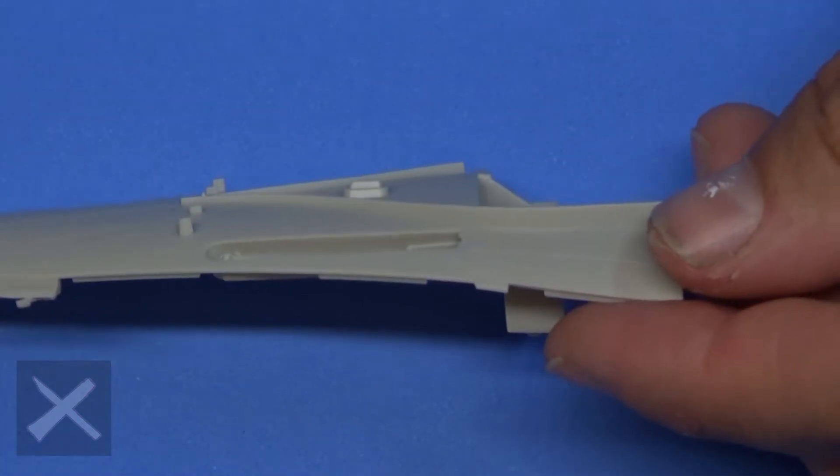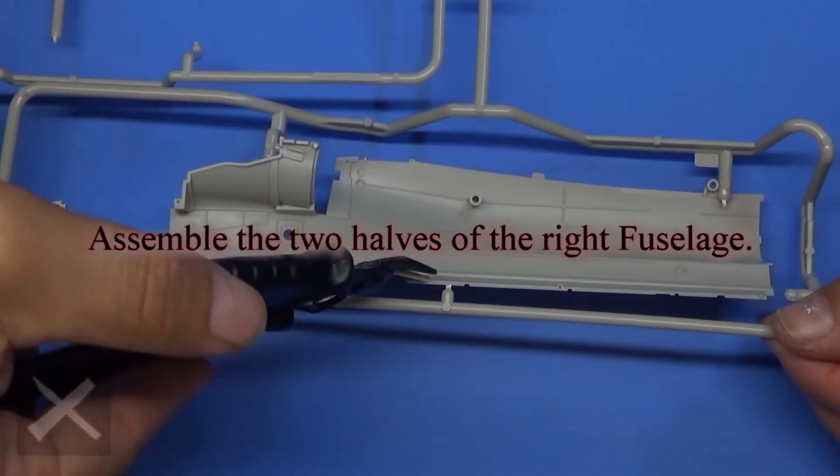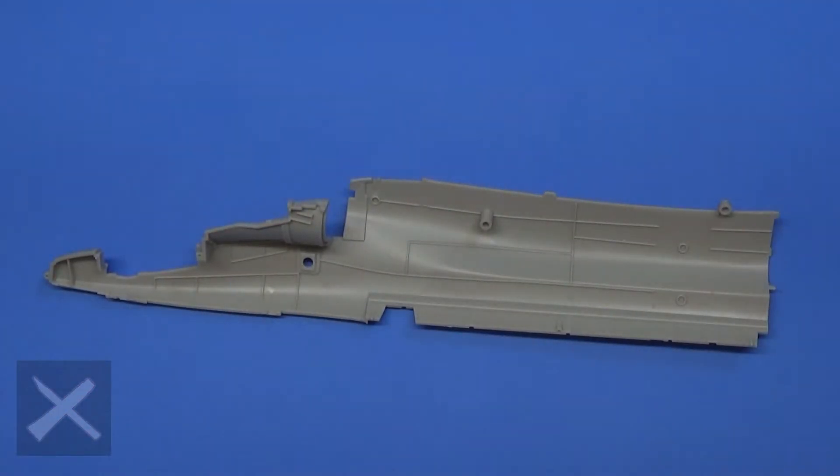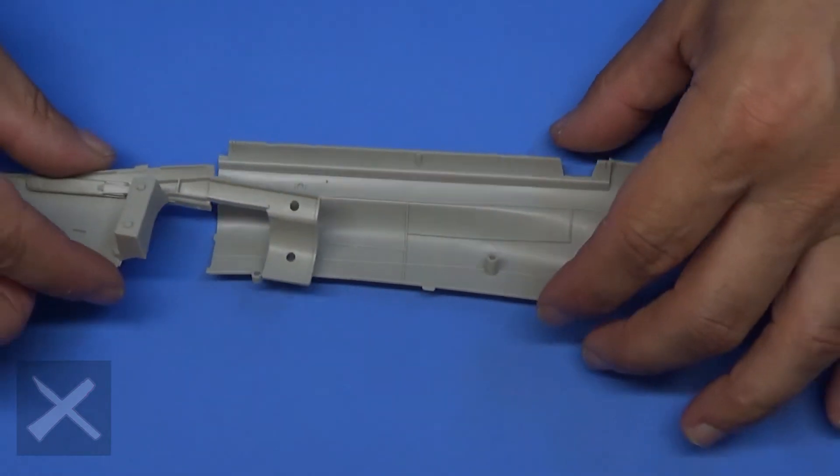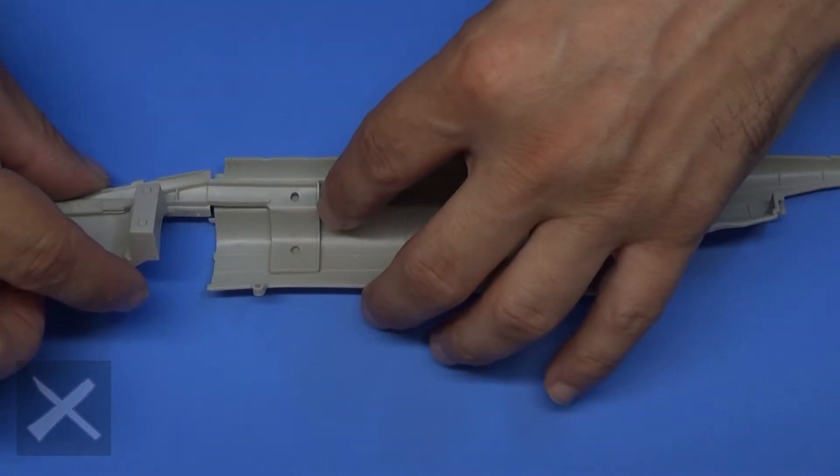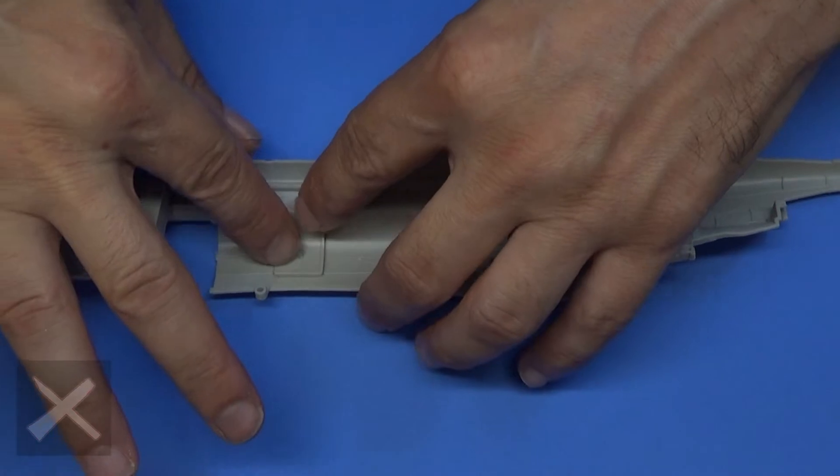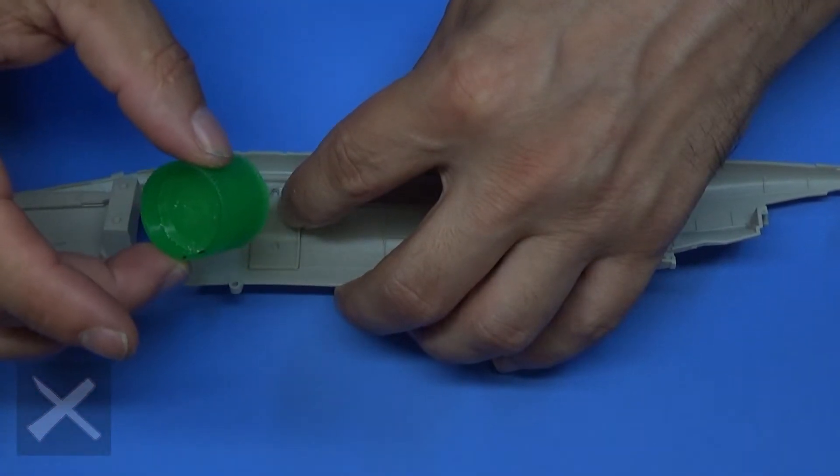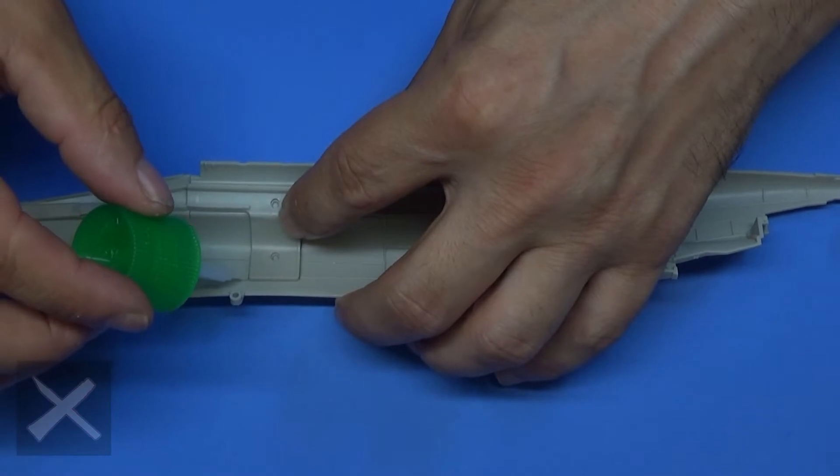So here we go. We are putting in this little area here for the fueling probe. This is one half of the fuselage of the right side. This is the other part of it. You piece this together right here. There were very little seams in this kit. So this is great.